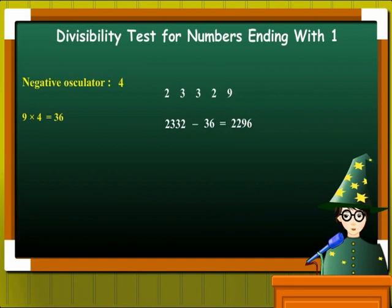Let's now take the last digit of the number, that is 6, and let's multiply it with the negative oscillator, which still remains 4. So 6 into 4 is 24. Let's now subtract it from the remaining digits. So 229 minus 24, this gives us 205.